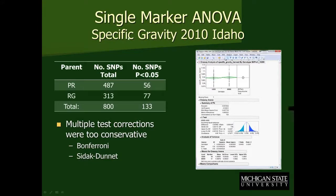We're getting to the point of doing the QTL analysis and some of the mapping work. What we wanted to do was take a quantitative trait — specific gravity. We took one set of data, the 2010 Idaho data. We give kudos to Rich Novy for that, as he had a good data set for us to work with.